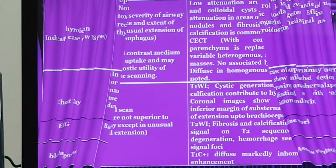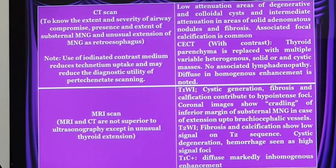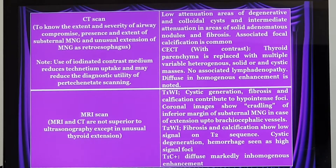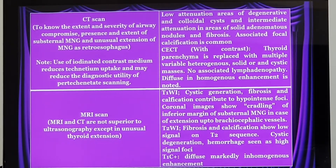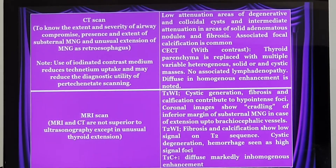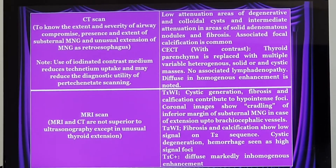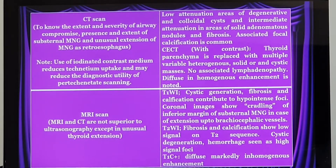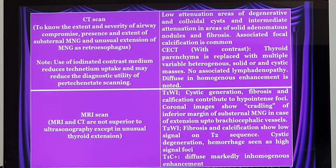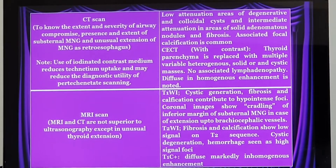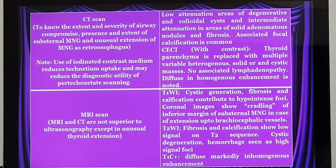After ultrasonography of the neck, if you ask whether you need a CT or prefer MRI scan — let me tell you the indications. When do you prefer a CT scan of the neck and upper chest? CT scan is indicated for patients with severe airway compromise, to know the presence and extent of extension of the thyroid gland from the neck down to the upper chest, and if there is unusual extension going behind the food pipe. These are the normal indications, and we prefer to do CT scan with contrast.